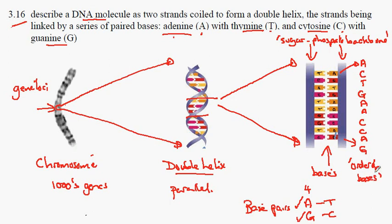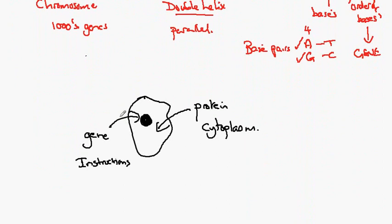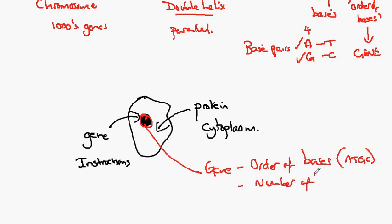Now this is a very important point because it's this order that we call the gene. The gene, remember, is inside the nucleus. So we have here a gene which can be defined as the order of the bases A, T, G and C.